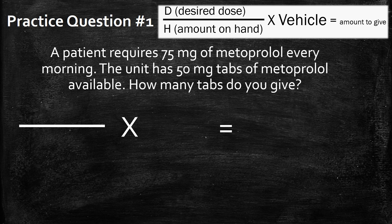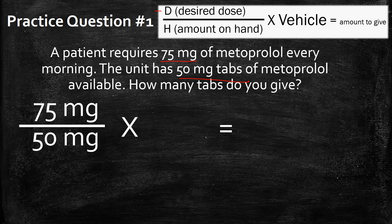Let's pull up our formula and get started. The desired dose is what the patient needs, so the patient requires 75 milligrams — let's put that in the first fraction. The second part is the amount on hand, what the unit has available. Obviously if the unit had 75 milligram tabs we'd give one tab, but that's not always the case. In this case, the unit has 50 milligram tabs, so we put that in the bottom half of our fraction.